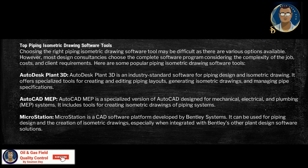Piping isometric drawing software packages are of two types: 2D software and 3D software. In 2D software, the piping isometric is generated manually, whereas 3D piping software programs have the capability of automatic isometric generation. Choosing the right piping software tools may be difficult as there are various options available. However, most design consultancies choose the complete software program considering the complexity of the job, costs, and client requirements.